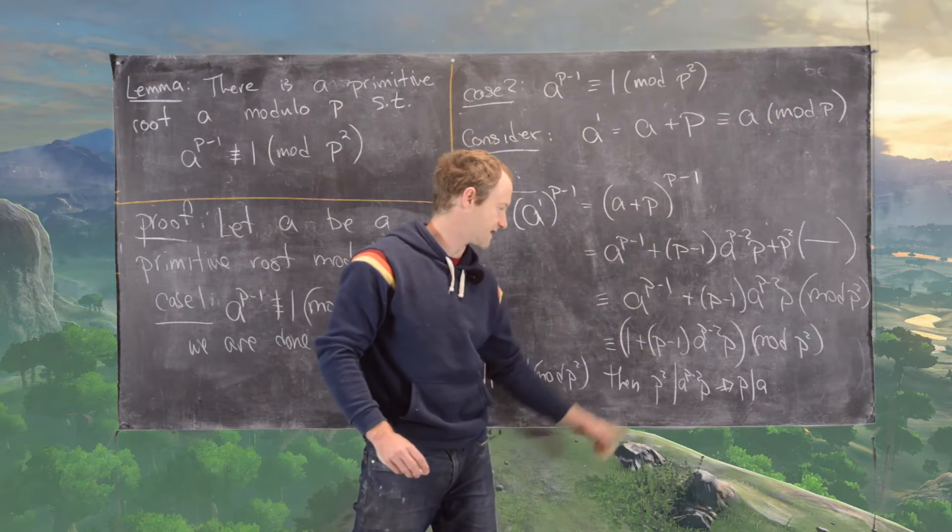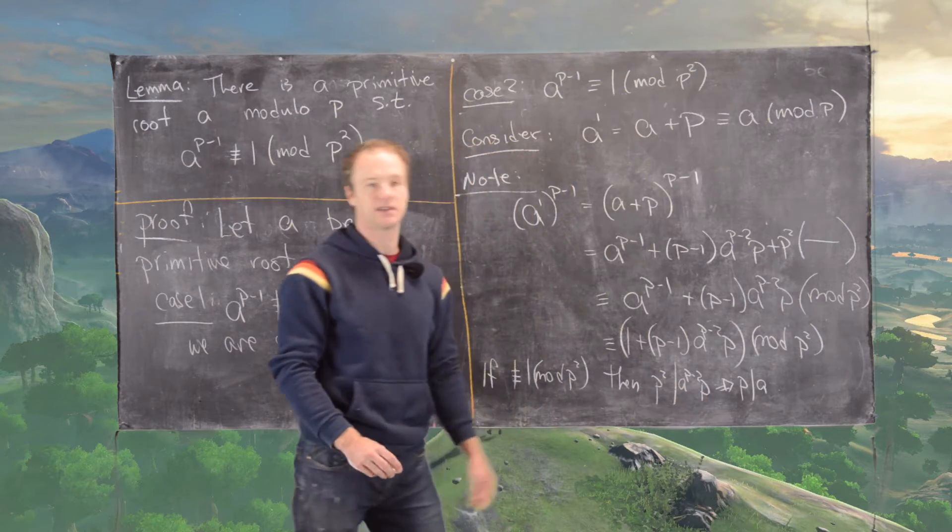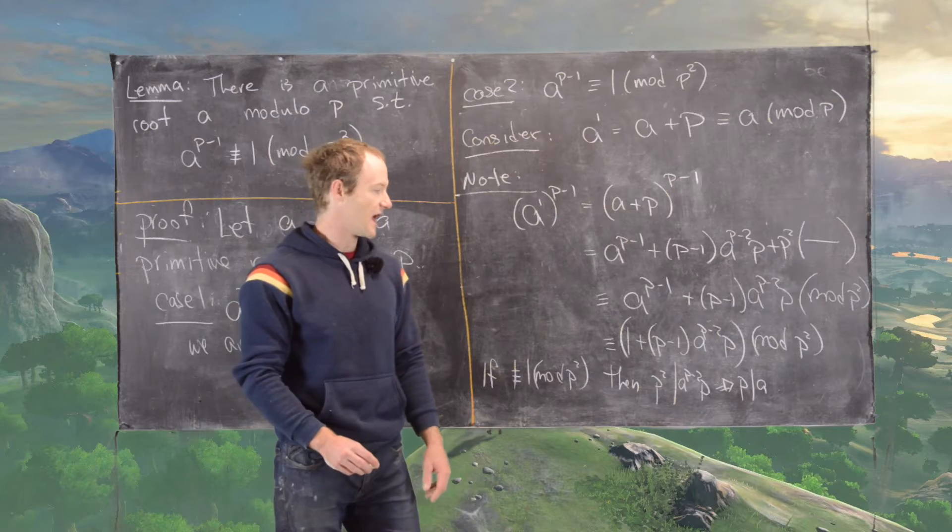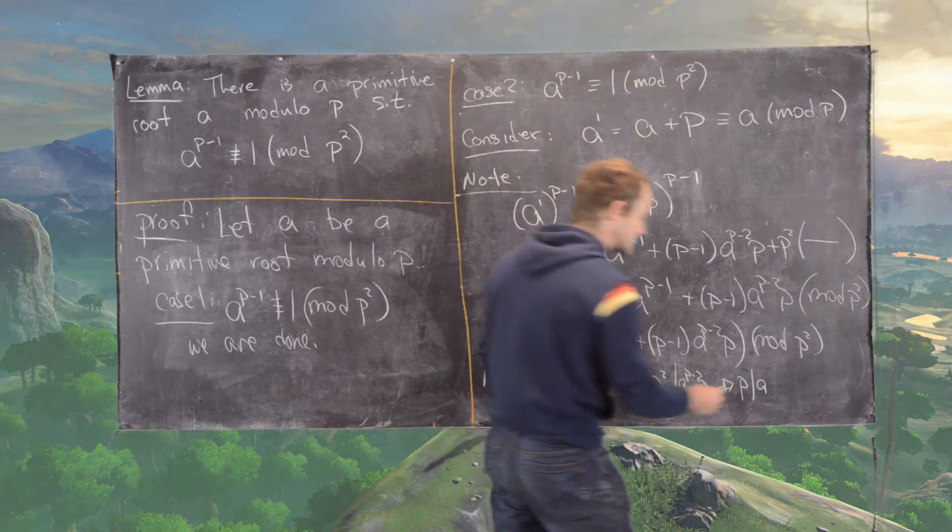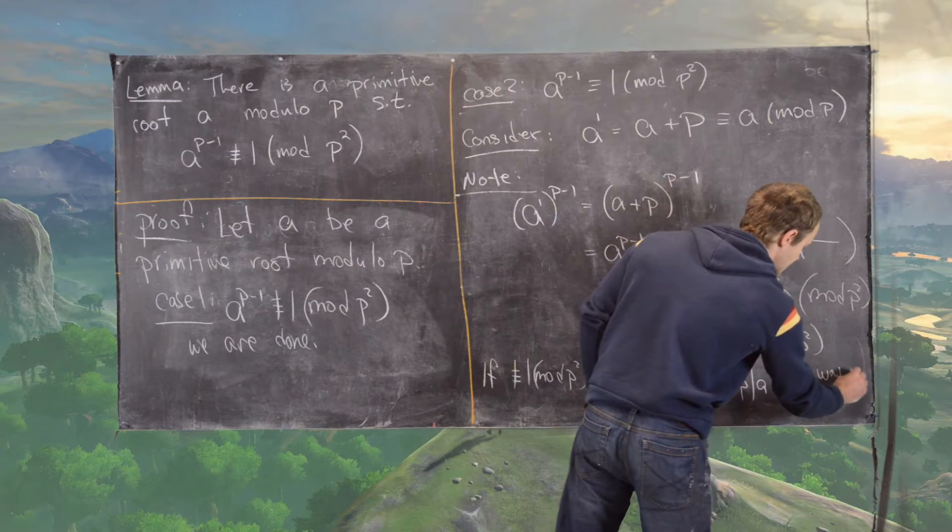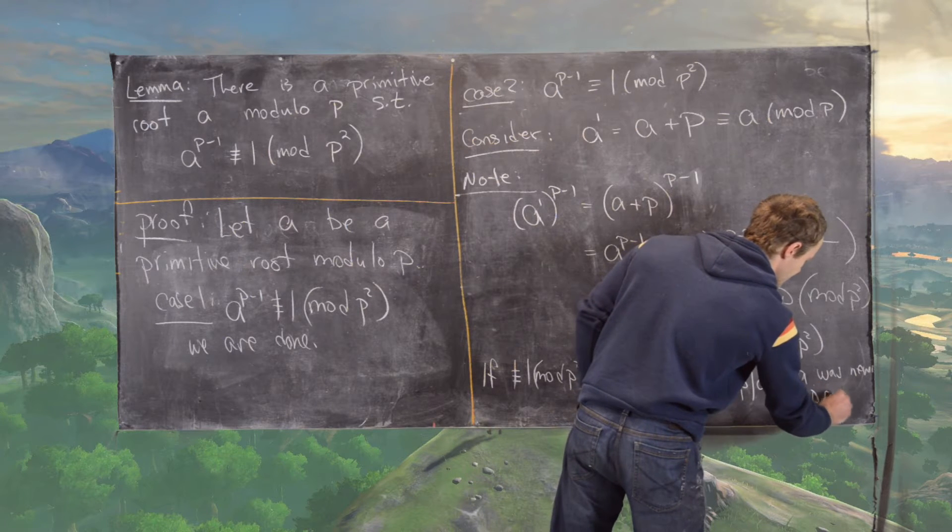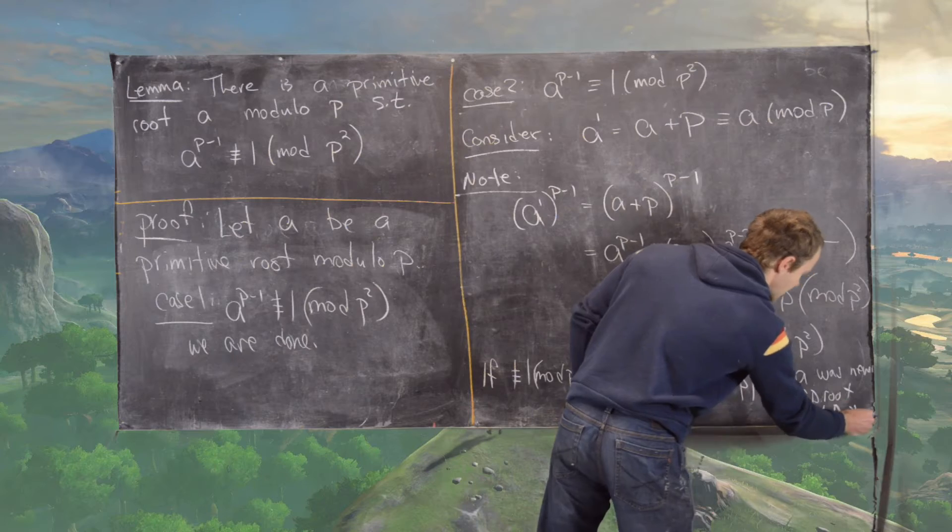So if p squared divides this, we can factor one factor of p out by erasing the p on the right-hand side, which means p squared divides a power of a, but that means p divides a. But what that tells us is that a was never a primitive root mod p, which is a contradiction.